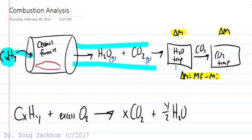The first is going to prevent water from passing and filter it out in a water trap, and then the CO2 continues on and gets caught in a CO2 trap later on. The difference in the mass of these traps will be equal to the experimental quantities of H2O and CO2.